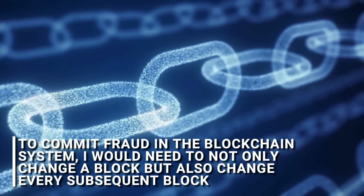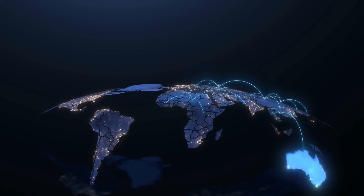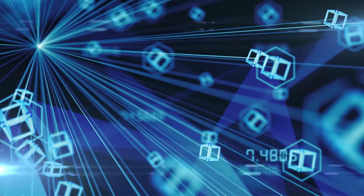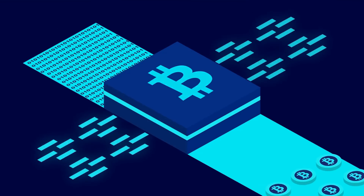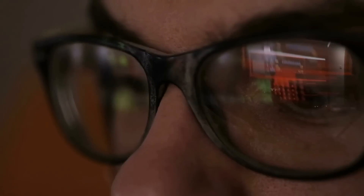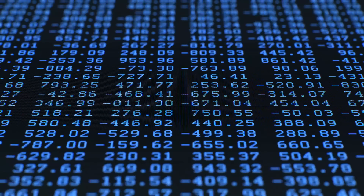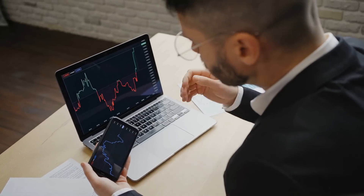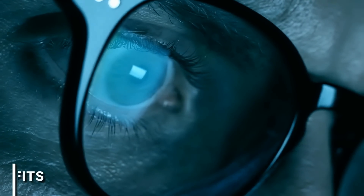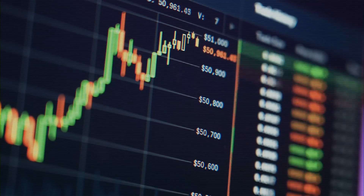To commit fraud in the blockchain system, you would need to not only change a block but also change every subsequent block — and you would have to do this on at least half a million computers around the world. This is because the blockchain ledger is stored on many computers, and the majority of them must be consistent with the tampered one for the fraud to go undetected. To hack into 500,000 computers at once is much more difficult than just hacking into someone's bank account and stealing money by guessing their PIN. Despite this, cryptocurrencies still have their own problems. Some people are enthusiastic about cryptocurrencies because of their unique features and benefits, and this includes the potential for investment opportunities.